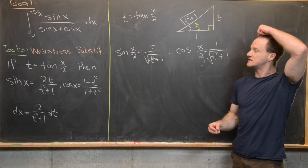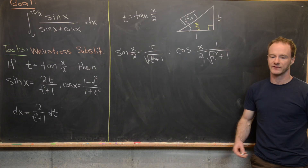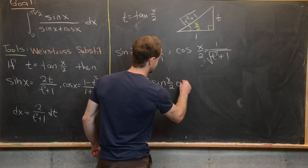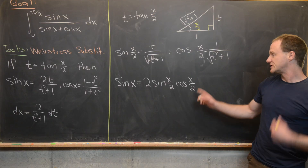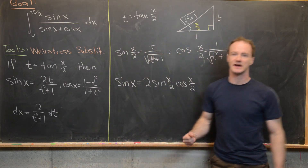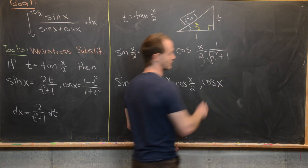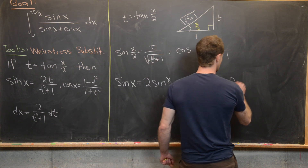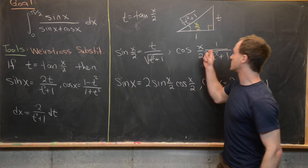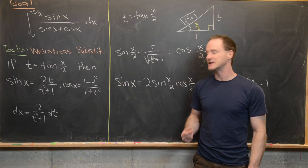Now we can use half-angle formulas to get the values of sine and cosine of x instead of x over 2. Specifically, sine of x equals twice sine of x over 2 times cosine of x over 2. Taking that product with the values we've derived gives sine x equals 2t over t squared plus 1. Similarly, using cosine x equals 2 cosine squared of x over 2 minus 1 gives cosine x equals 1 minus t squared over 1 plus t squared.